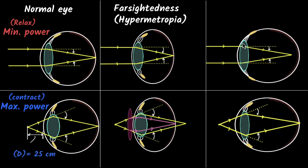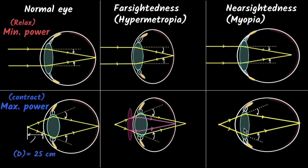However, what about focusing on things that are far away? Your brain will tell the ciliary muscles to relax, but they're already at the most relaxed position — the minimum power position. They can't relax anymore, which means your eyes cannot reduce the power further. Therefore, you will not be able to see things far away. This condition — where you can see things clearly close by but can't see things far away — is called nearsightedness. The biological name is myopia.